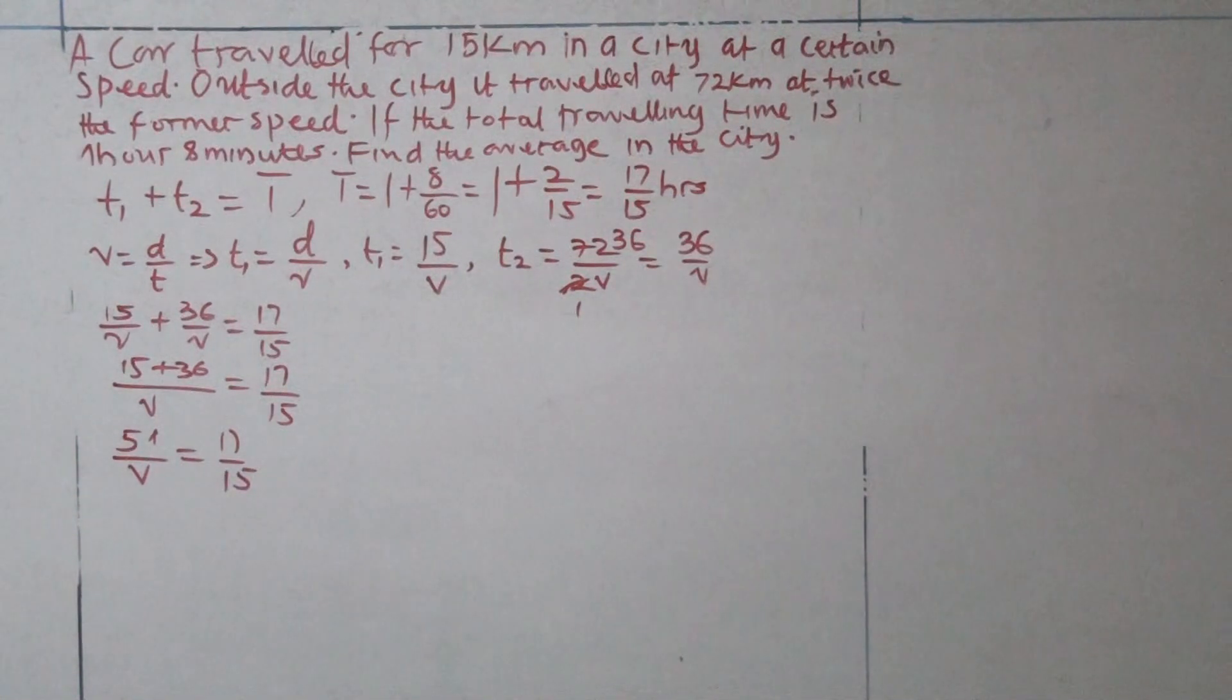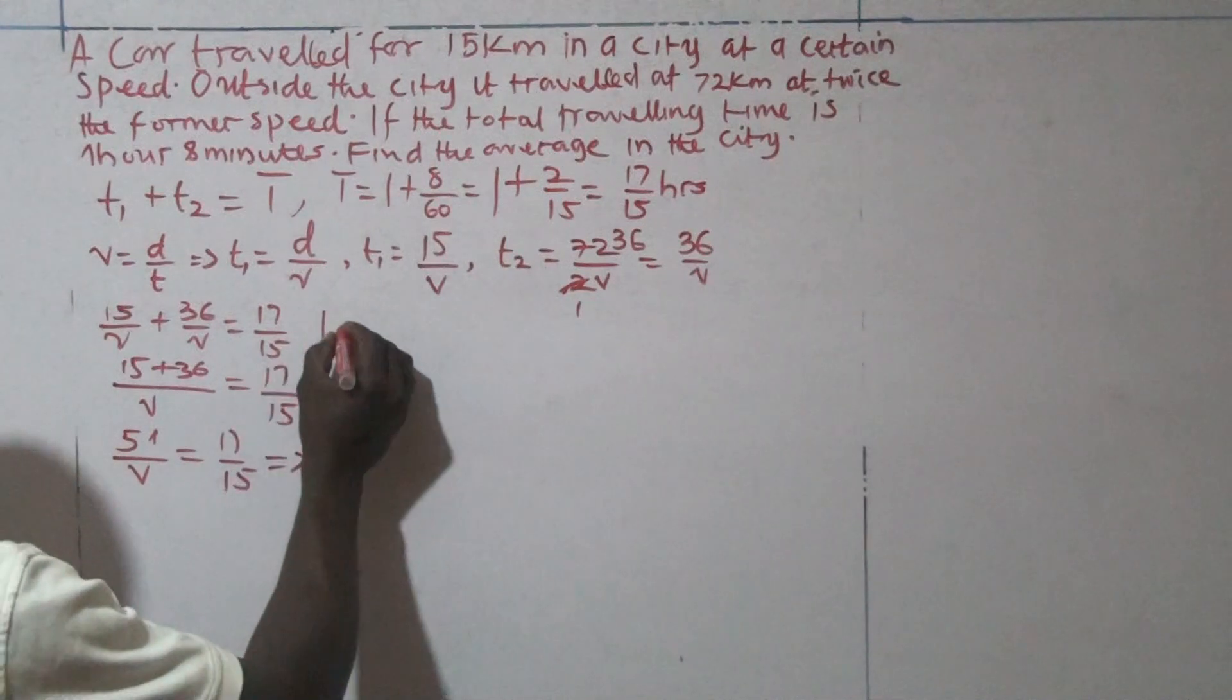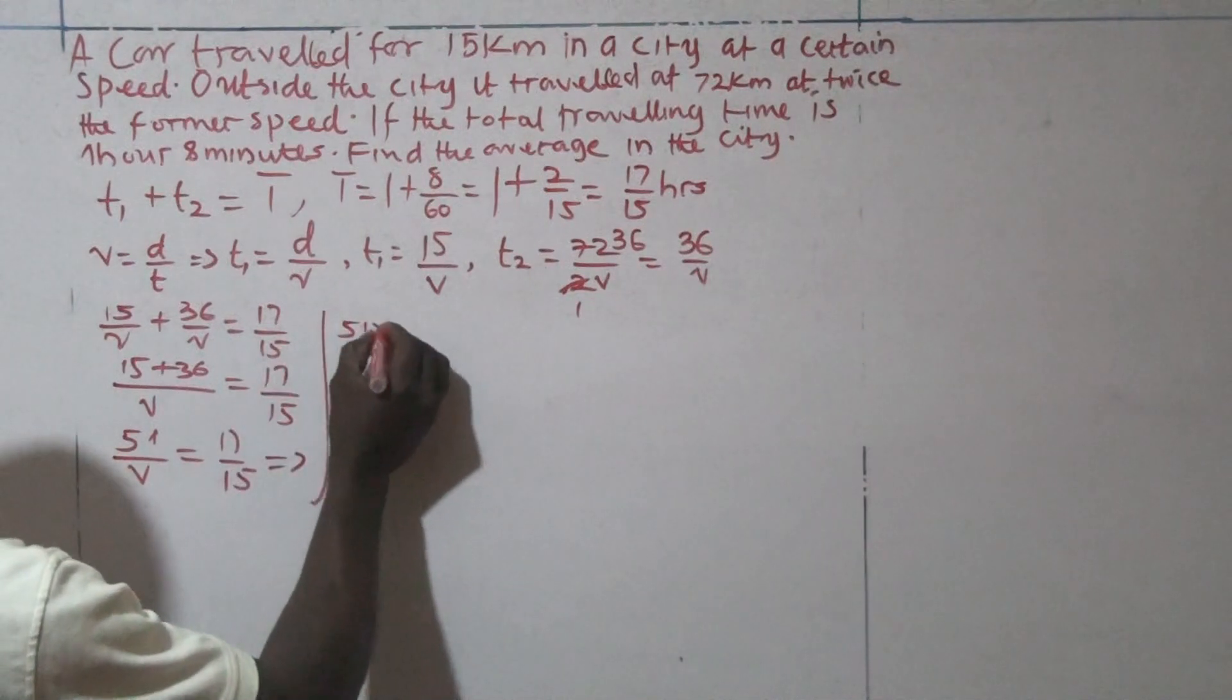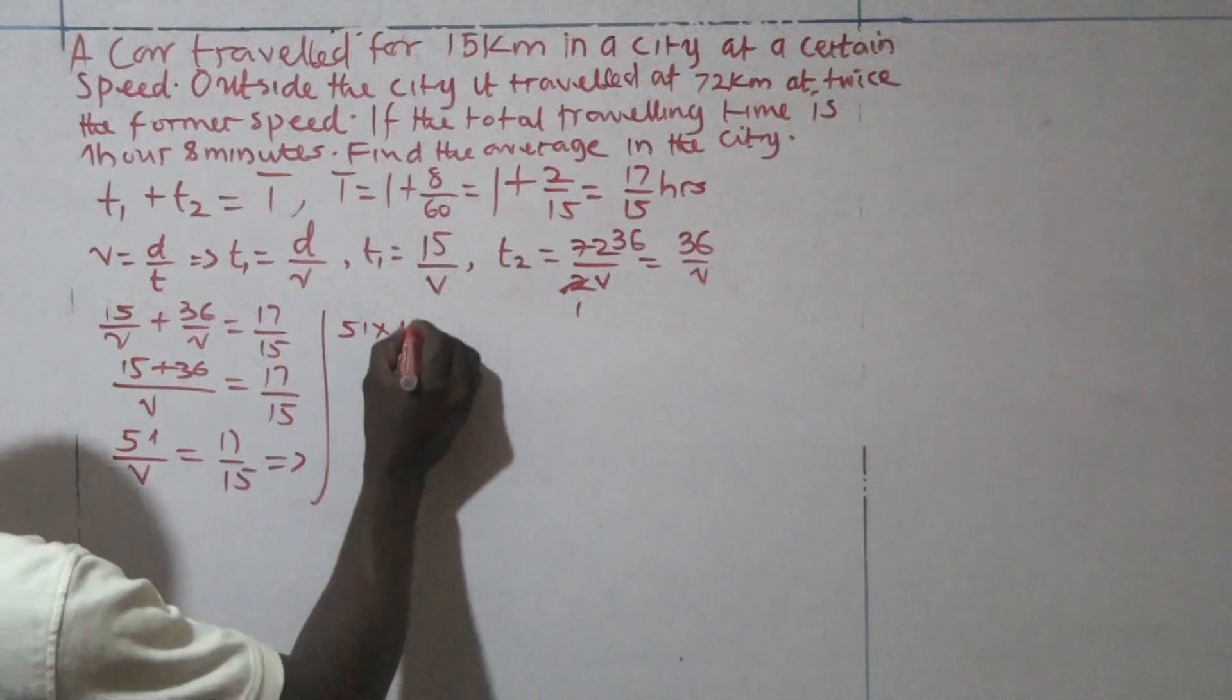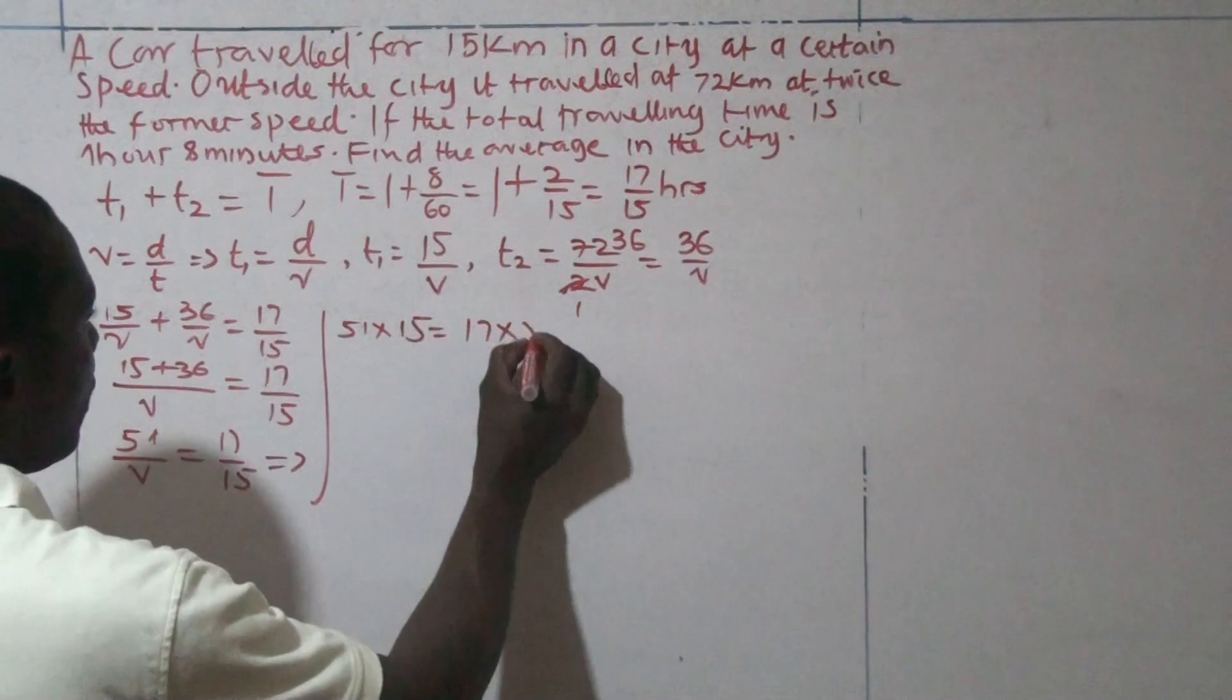What we need to do here is cross-multiply. If we cross-multiply here, we will see that this will be 51 times 15, and here will become 17 times V.